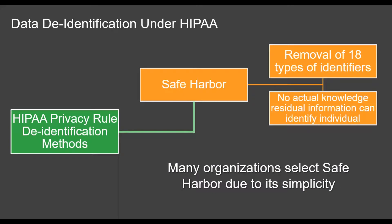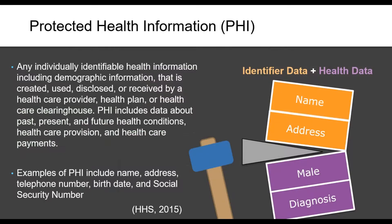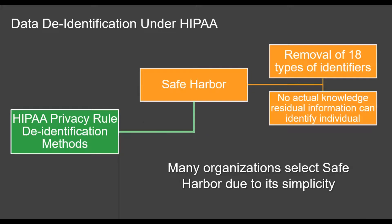HIPAA offers two strategies for de-identifying PHI. The first is called Safe Harbor — think of it like driving a wedge between the health data and the identifiers so they can't be put back together, while keeping the data useful. Safe Harbor requires the removal of 18 types of identifiers from the dataset to ensure that no one receiving it could establish the identity of an individual.